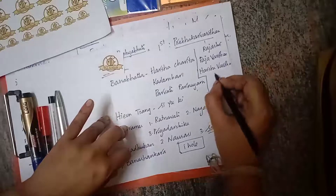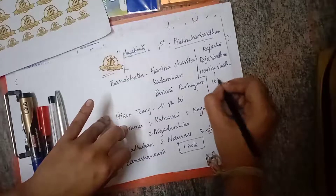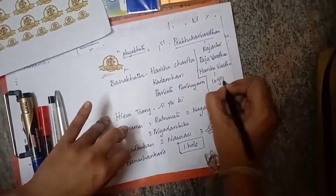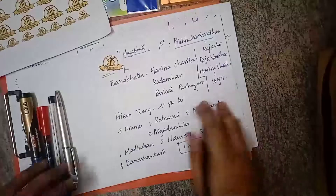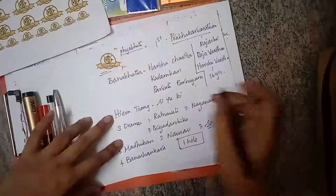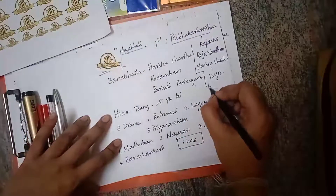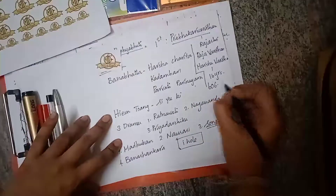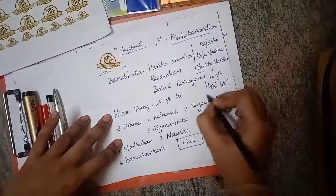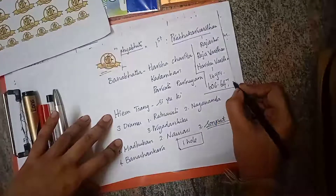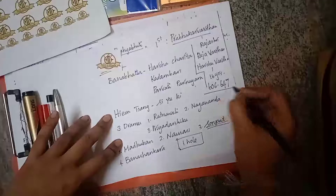Harshavardhan was made king at just 16 years of age. He ruled from 606 to 647 AD.